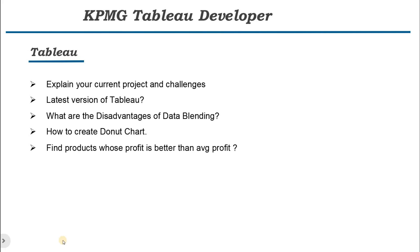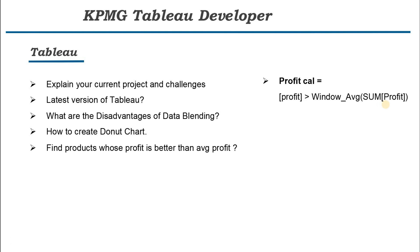The next question is: find products whose profit is better than the average of profit. We have a list of products and we need to identify those whose profit is better than the average. For this, we can write a calculation using our profit field, greater than, and the WINDOW_AVG function with SUM of profit. The WINDOW_AVG function will calculate the average of all the products present in the view. We are creating a Boolean field because Boolean works better — whenever you need to use a calculation like a filter, always go with Boolean instead of string so you can assign color based on true and false, and it will also optimize your dashboard.